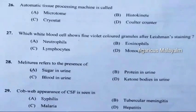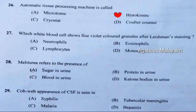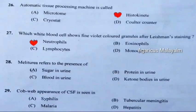Question 26: Automatic tissue processing machine is called — correct answer is option B, histokinette. Question 27: Which white blood cells show fine violet colored granules after Leishman staining? Correct answer is option A, neutrophils.